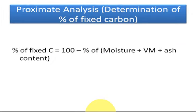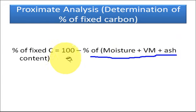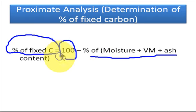For the percentage of fixed carbon, simply subtract the percentage of moisture, volatile matter, and ash content from 100. So: fixed carbon% = 100 − (% moisture + % volatile matter + % ash).